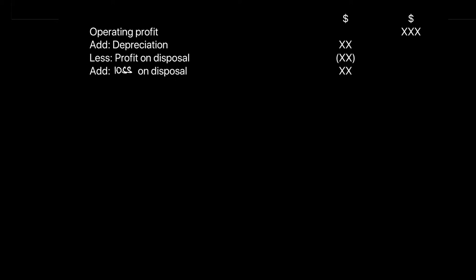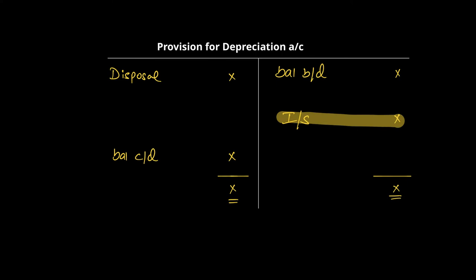Before explaining other adjustments, one important note on depreciation: sometimes the figure is given directly, which is easy — you just add it. Other times you'll be required to calculate it. To do so, draw the provision for depreciation account. You start with your opening depreciation balance, add the current year's depreciation (what we're looking for), subtract the disposal depreciation, and find the closing balance. Remember: this is a contra asset — it increases from the credit side and decreases from the debit side. The figure we need is the current year's depreciation expense entered in the income statement, which we add back to operating profit.